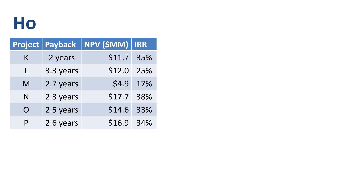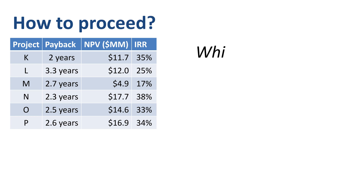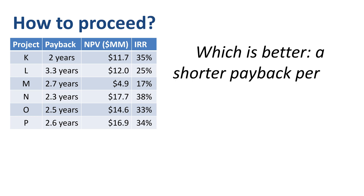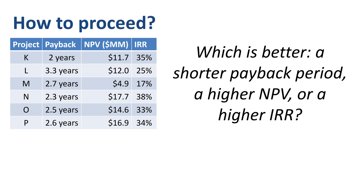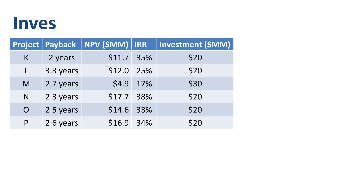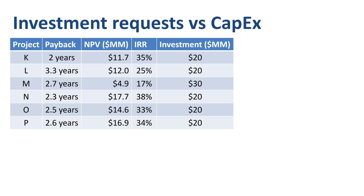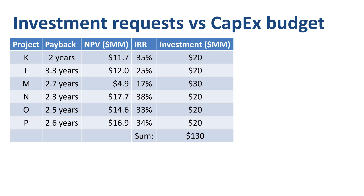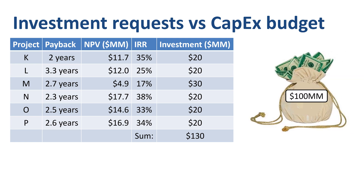So, where do we go from here? Which is better — a shorter payback period, a higher NPV, or a higher IRR? Well, it depends. First, how much investment budget is being requested, and how much CAPEX budget is available. The six projects in our example add up to a requested $130 million. The CAPEX budget that the company makes available for the current year is $100 million.